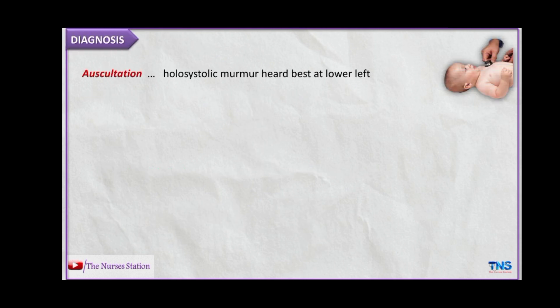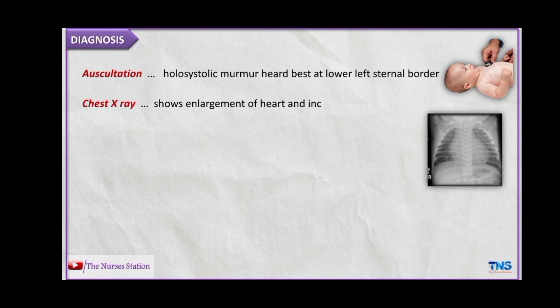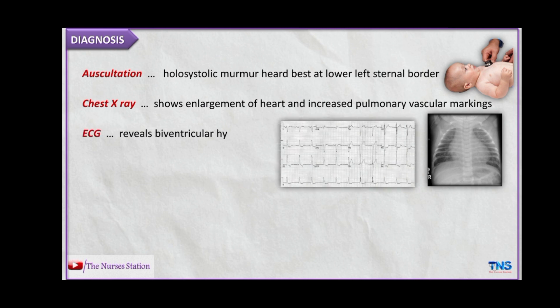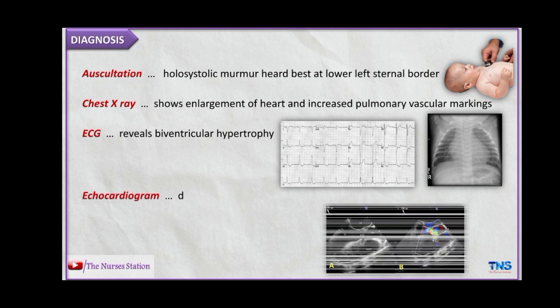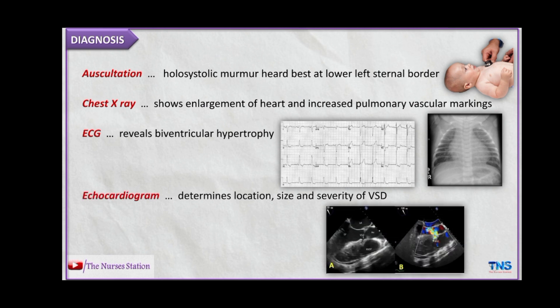Diagnostic evaluations include auscultation — listening for the holosystolic murmur heard best at the lower left sternal border. Chest X-ray shows enlargement of the heart and increased pulmonary vascular markings due to pulmonary hypertension. ECG reveals biventricular hypertrophy. Echocardiogram determines the location, size, and severity of the ventricular septal defect.